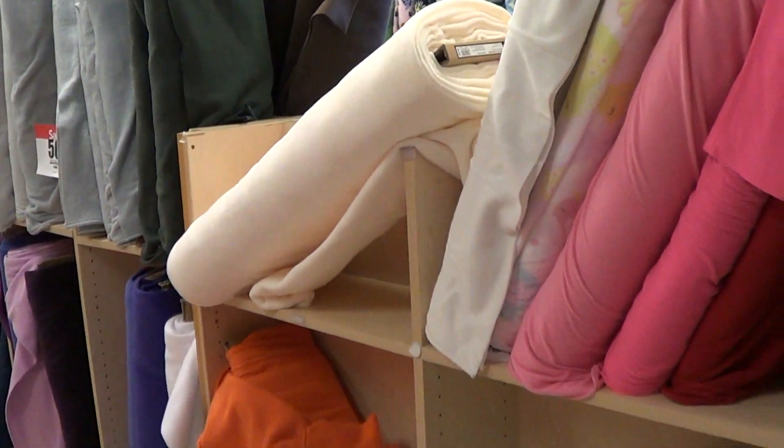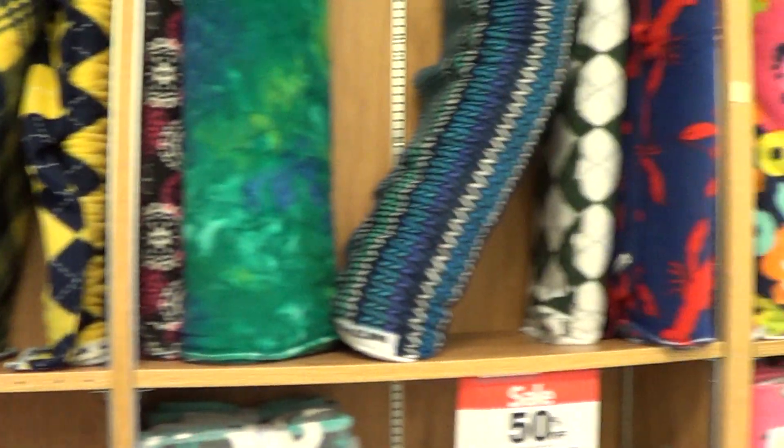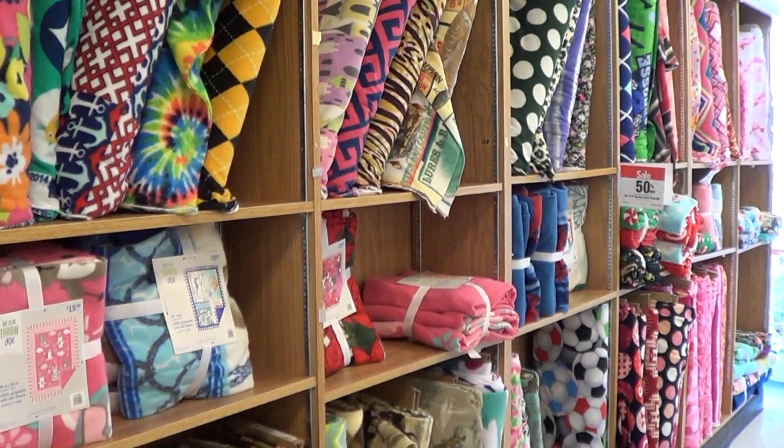The first thing you need to do is go to a fabric store and pick out two different designs that will go together for your blanket, the top and the bottom of the blanket. Also decide how big you want your blanket.